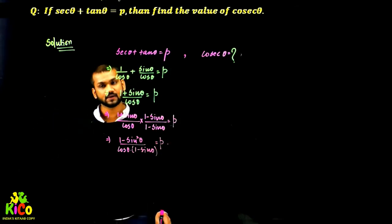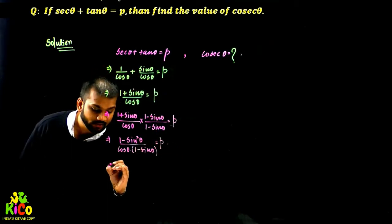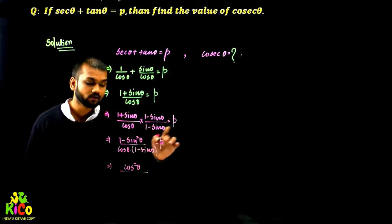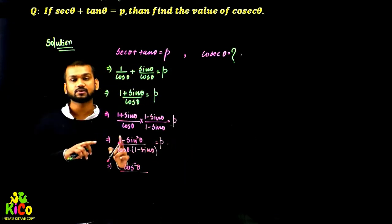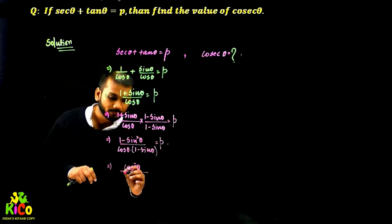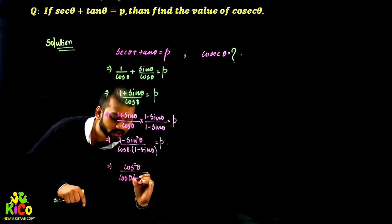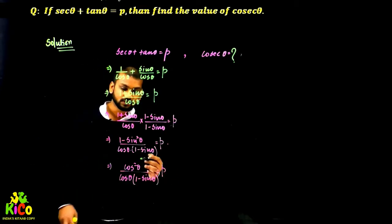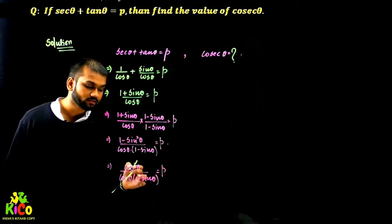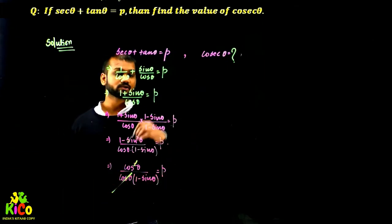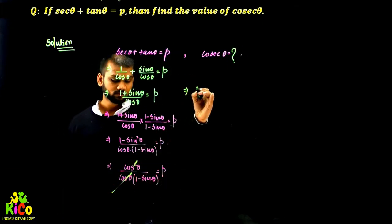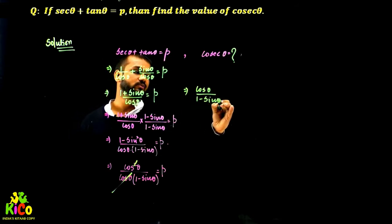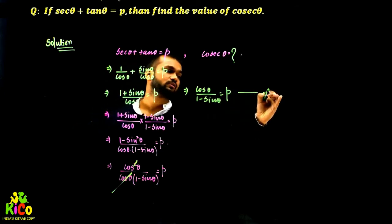Now, what is 1 minus sin²θ? This equals cos²θ — that is the identity: 1 minus sin²θ is always equivalent to cos²θ. So in the numerator we have cos²θ, in the denominator we have cos θ times (1 minus sin θ), and this value equals P. Now cos θ in the numerator will cancel one cos θ from the denominator, leaving us with cos θ upon (1 minus sin θ) equals P. This is our second equation.